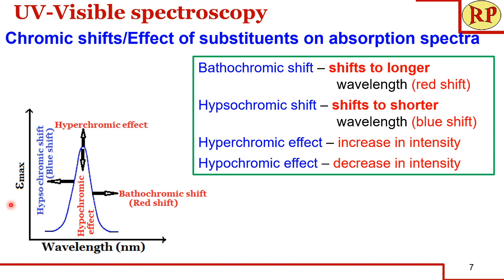There are four types of chromic shifts or effects. With epsilon-max on the y-axis and wavelength on the x-axis: when the absorption band shifts to a longer wavelength it is called a bathochromic shift or red shift; when it moves to a shorter wavelength it is called a hypsochromic shift or blue shift. When the intensity of the absorption band increases it is a hyperchromic effect; when it decreases it is a hypochromic effect. Normally a bathochromic shift is accompanied by a hyperchromic effect, and a hypsochromic shift is accompanied by a hypochromic effect.